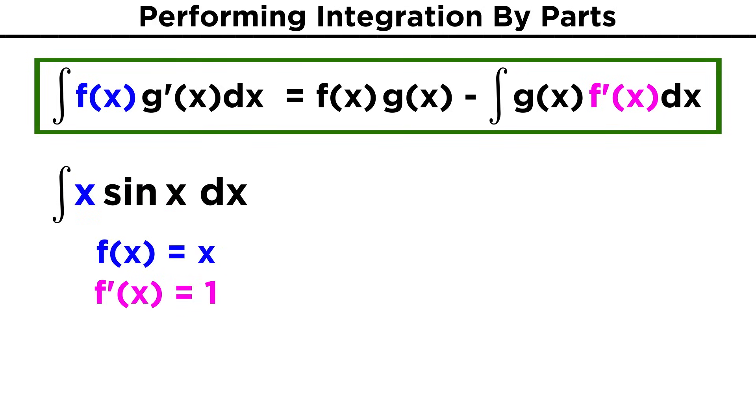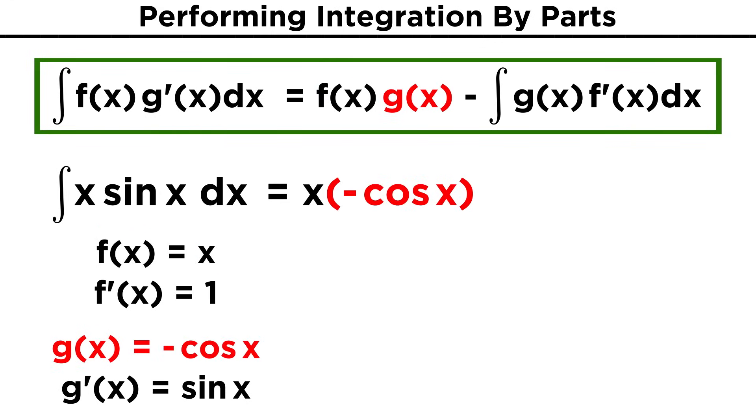So let's use x as f(x), because its derivative is one, which is as simple as it gets. So in the first integral, x will be f(x), and sin(x) will be g'(x). Then to see what this integral is equal to, the first term will be f(x) times g(x), so it's x times the antiderivative of sin(x), which we know is negative cos(x). So that's negative x cos(x). Now to evaluate the other integral.